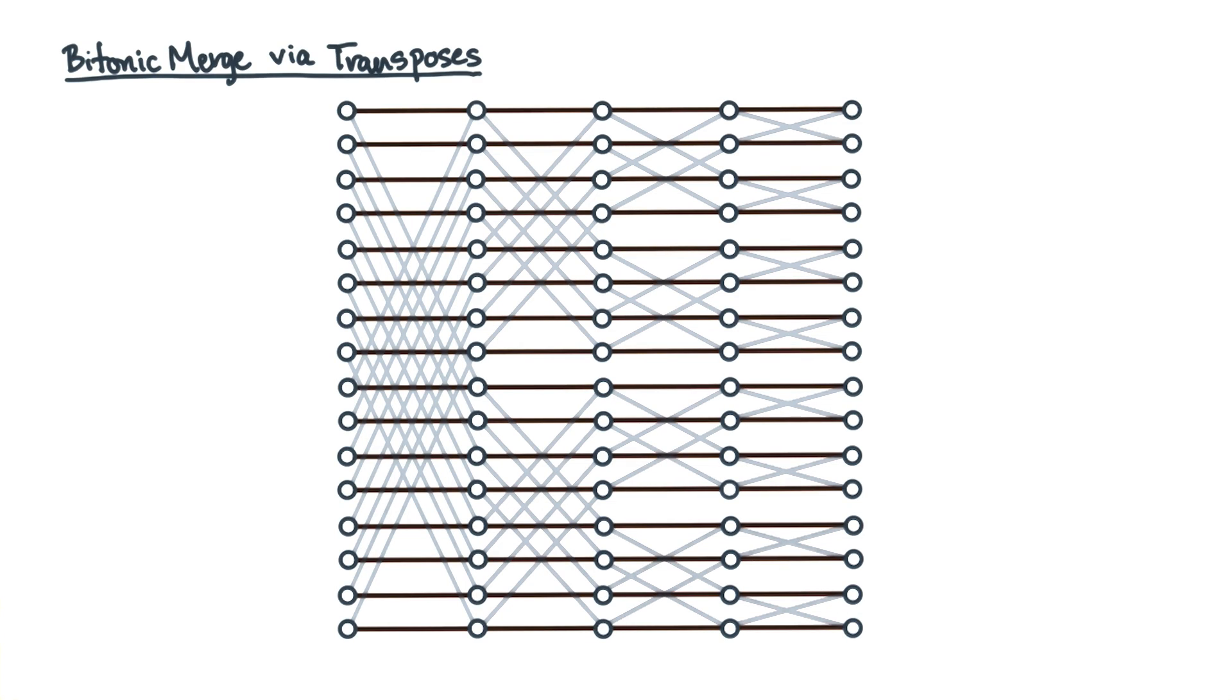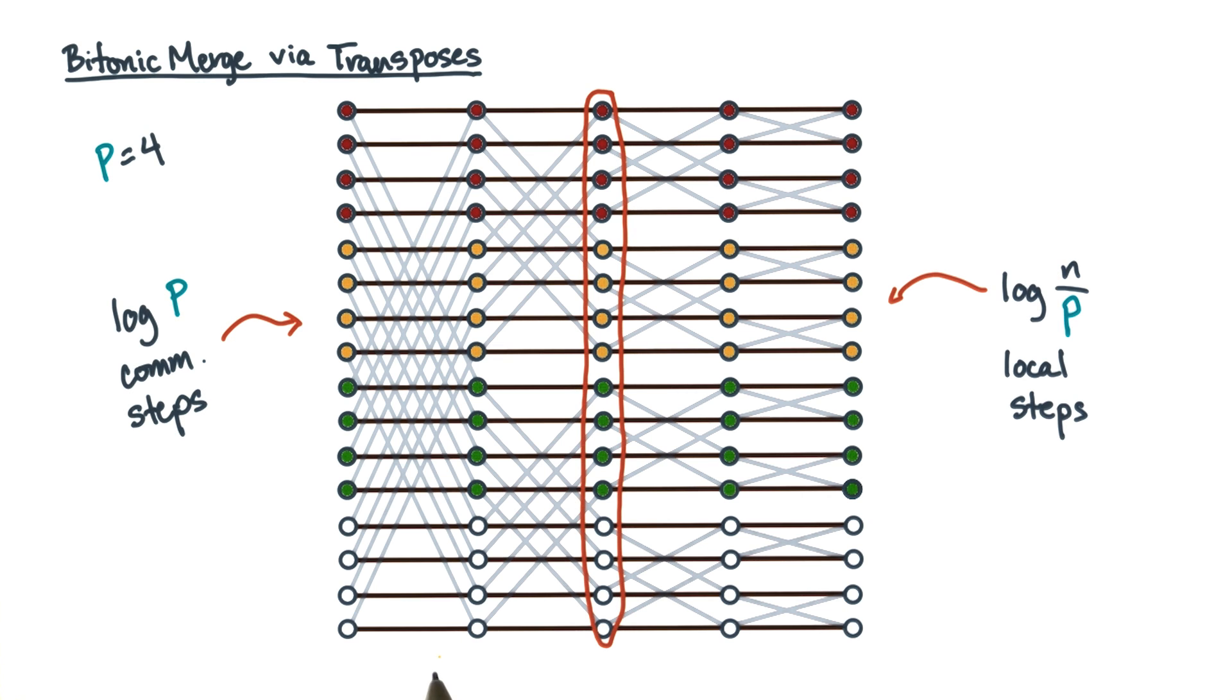You've derived two potential schemes for a distributed bitonic merge. The first is a block distribution scheme. It has log p stages of communication followed by log n over p stages of purely local computation.